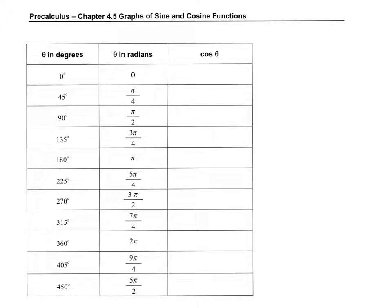So remember on our unit circle, cosine was the x value. So at zero degrees or zero radians, our cosine, our x value is one. At 90 degrees, my x is zero. At 180 degrees or pi radians, the x value is negative one. At 270 degrees, I am at zero. And at 360 degrees, I'm back to a positive one.